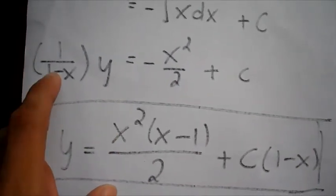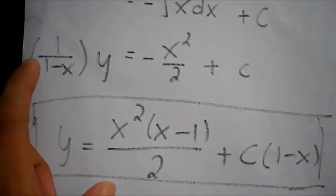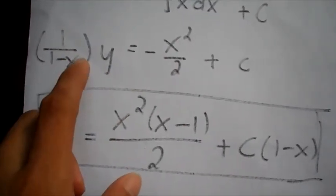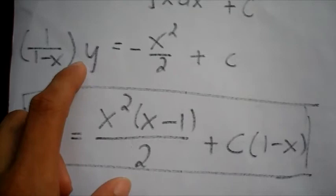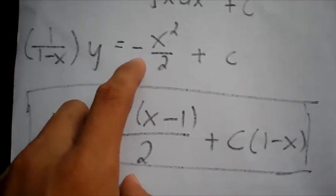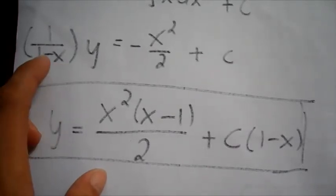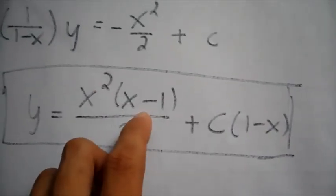Because we multiply 1 minus x on both sides of the equation to cancel this out here on this side. And since we have negative coefficient here the values of 1 and x change signs so we get x minus 1 here.